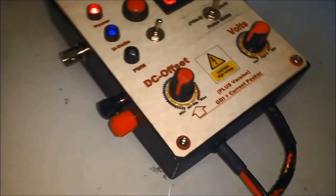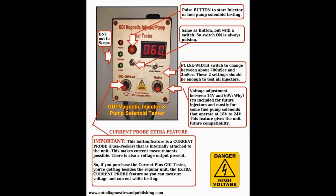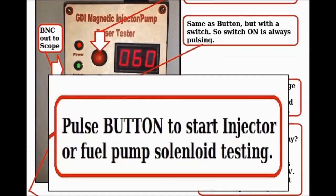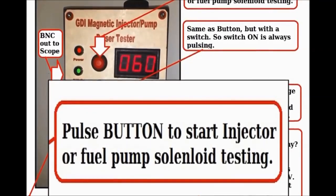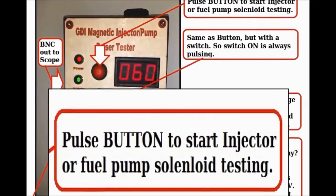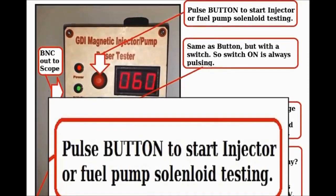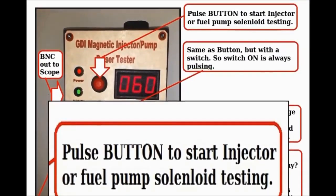The GDI magnetic injector tester is a tool with a couple of functions worth noting. The following controls are worth some notice. We have the button and the switch right below the button. The button is an on and off — it is a very exacting way to pulsate the injectors. That way, you can go into specific timings of the injector leak down, especially when you're doing leak down testing.